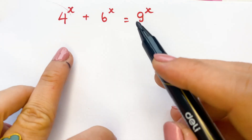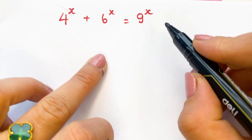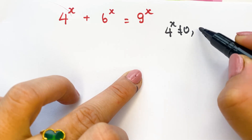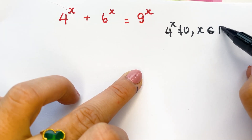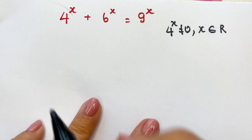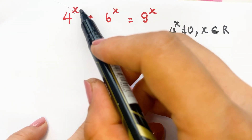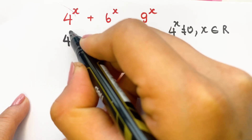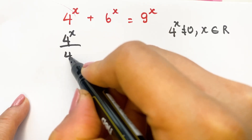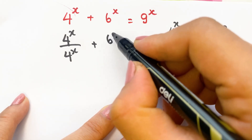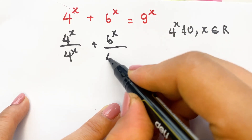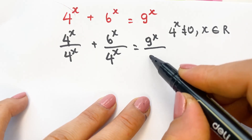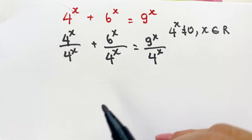Firstly, you can see that 4 power x is not equal to 0 when x belongs to a real number. So therefore, you need to divide both sides by 4 power x. Therefore, you can write: 4 power x over 4 power x, plus 6 power x over 4 power x, equals 9 power x over 4 power x.